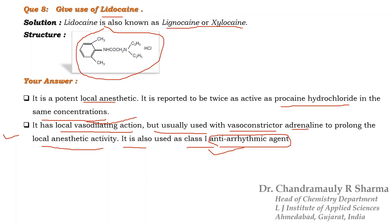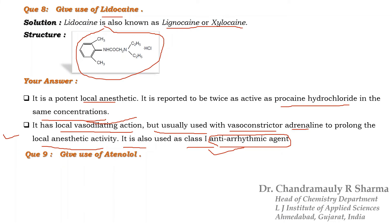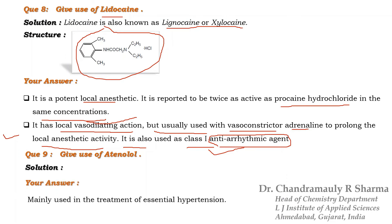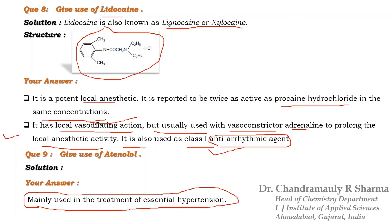The next question is: give the uses of atenolol. Atenolol is used as an anti-hypertensive drug, mainly used in the treatment of essential hypertension. It is one of the good anti-hypertensive drugs.